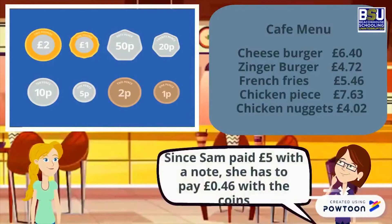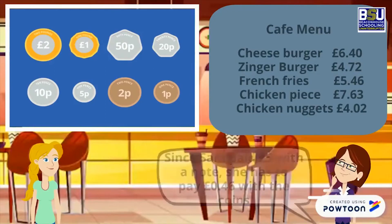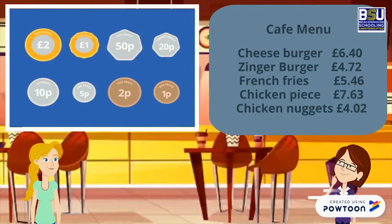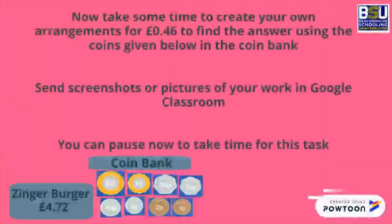Since Sam paid 5 pounds with a note, she has to pay 0.46 pounds with the coins. Now take some time to create your own arrangements for 0.46 pounds to find the answer, using the coins given in the coin bank. Send screenshots or pictures of your work in Google Classroom. You can pause now to take time for this task.